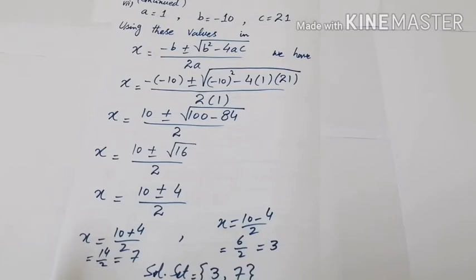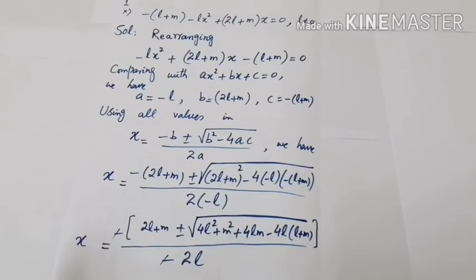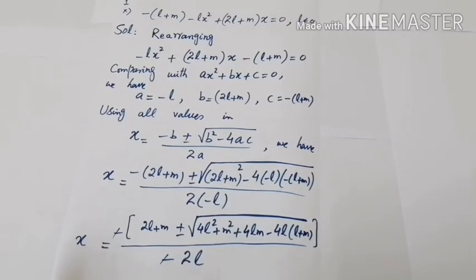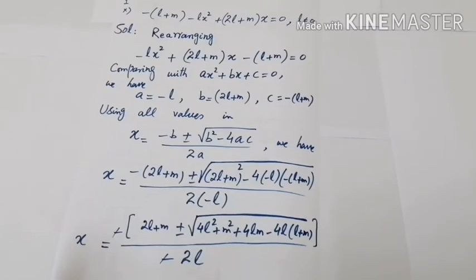Taking both options: x = (10 + 4)/2 = 14/2 = 7, and x = (10 − 4)/2 = 6/2 = 3. Hence the solution set is {3, 7}. Viewers, hope you are understanding.